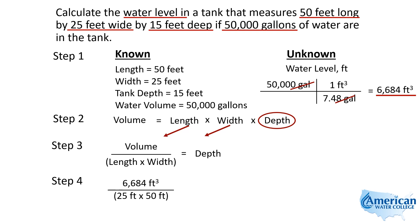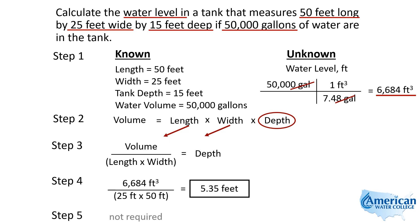That is Step 4. Step 4: we plug in our numbers and do the math. In the calculator, enter 6,684, then divide by 25, then divide by 50. Another way: multiply 25 times 50, hit equals to get that total, then divide 6,684 by that result. Try it both ways — if you go 6,684 divided by 25 divided by 50 and hit equals, you'll get 5.35 feet.